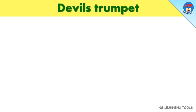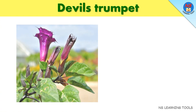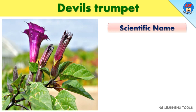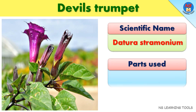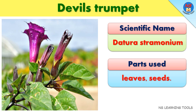Devil's trumpet. Scientific name: Deteristramonium. Parts used: Leaves, seeds.